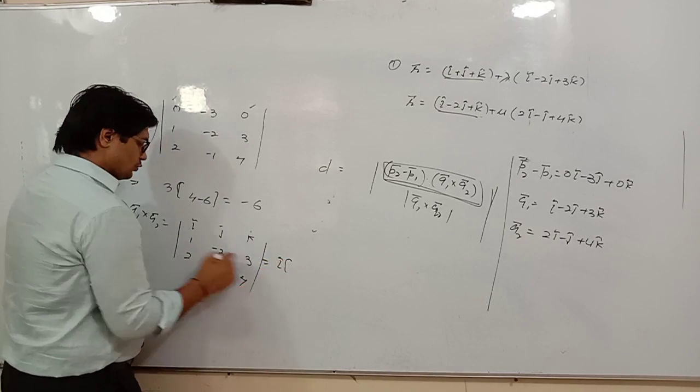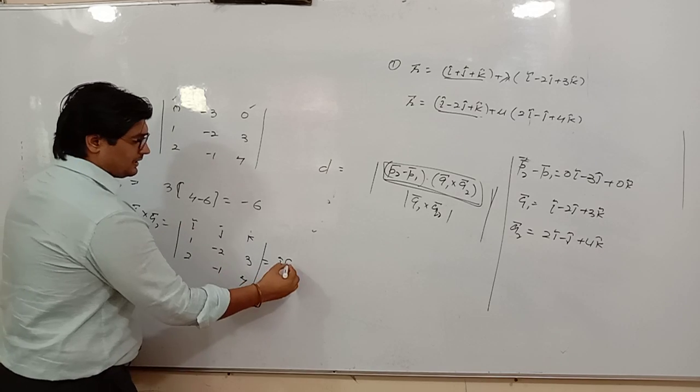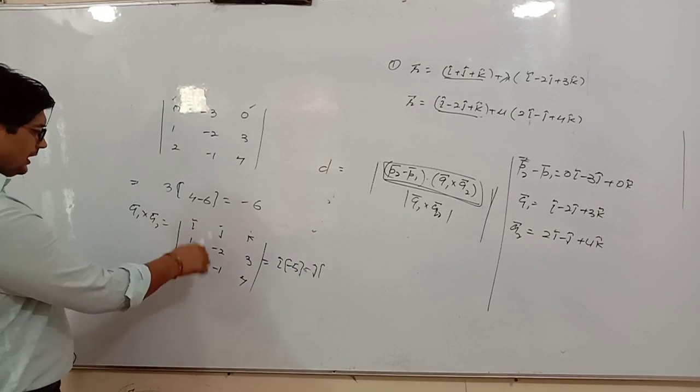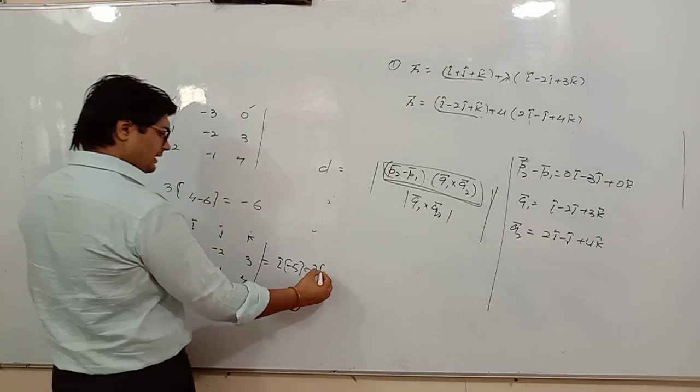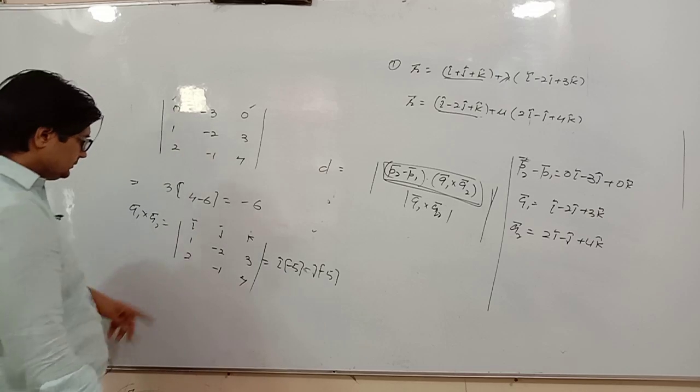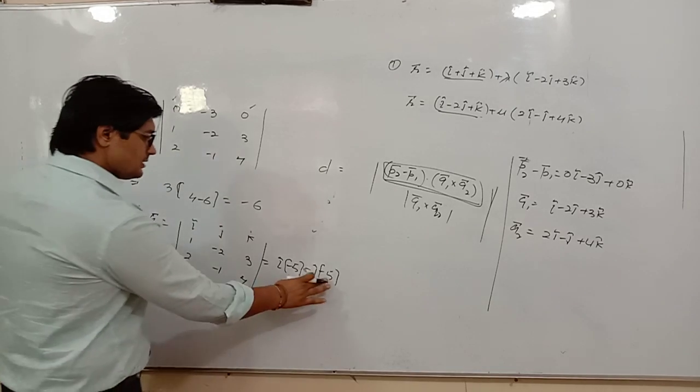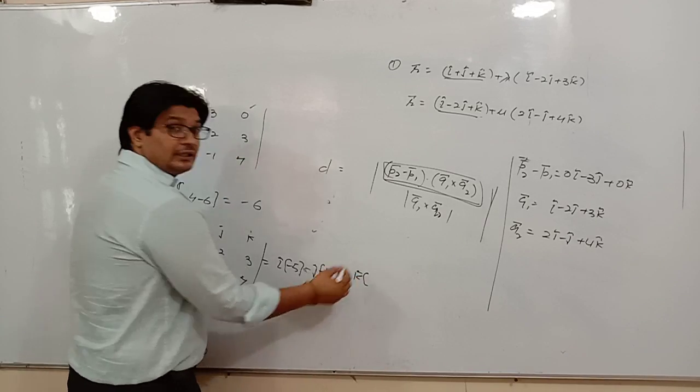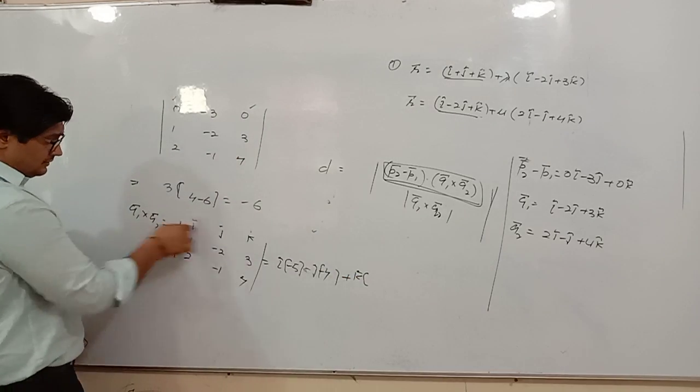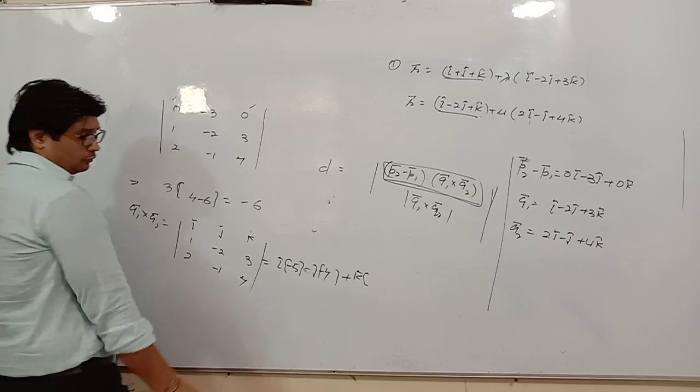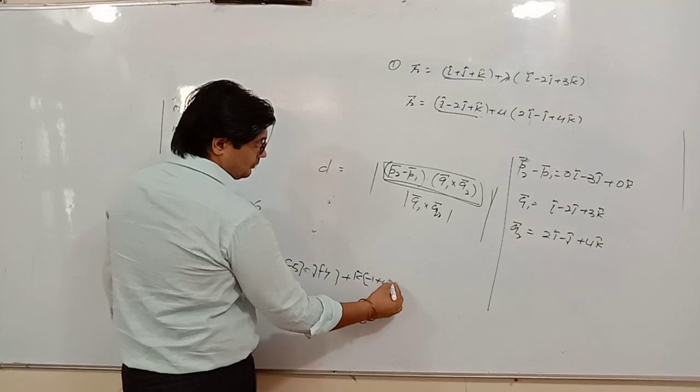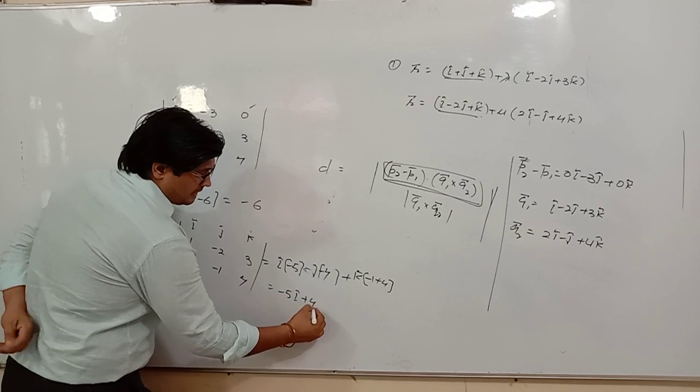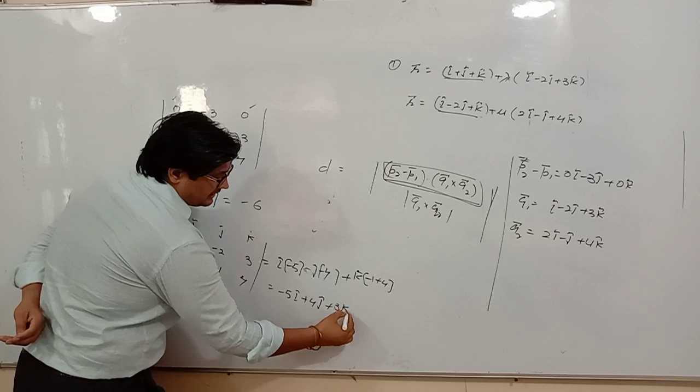Computing the determinant: i times (-8 + 3) = -5i, minus j times (4 - 6) = +5j, wait correction, 4 - 6 = -2, so -j times (-2) = 2j... Actually, let me recalculate: -j(4 - 6) gives +4j, and +k times (-1 + 4) = +3k. So Q1 × Q2 = -5i + 4j + 3k.